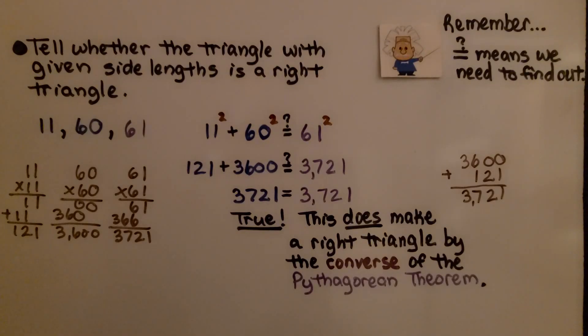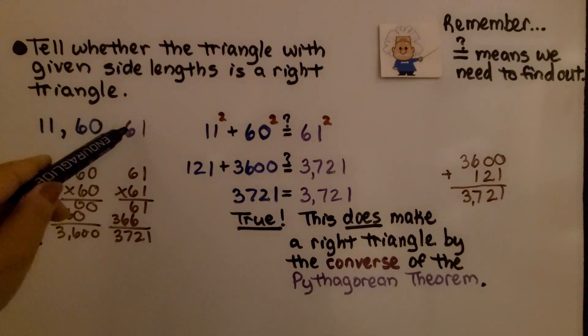Let's try another one. We're going to tell whether the triangle with given side lengths is a right triangle, and the side lengths we have are 11, 60, and 61.